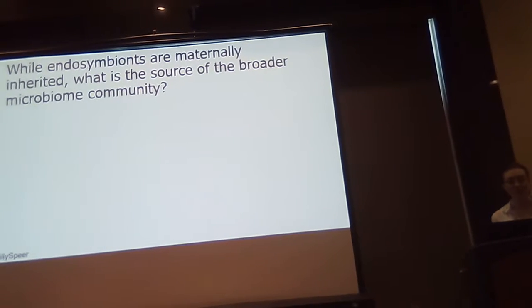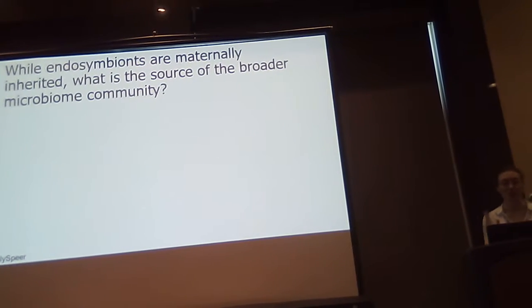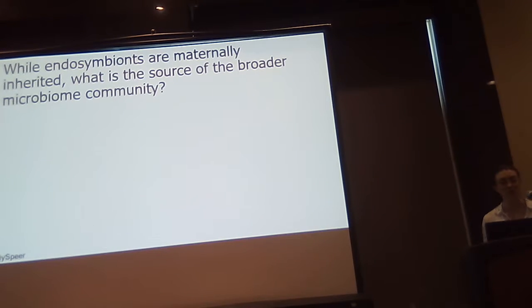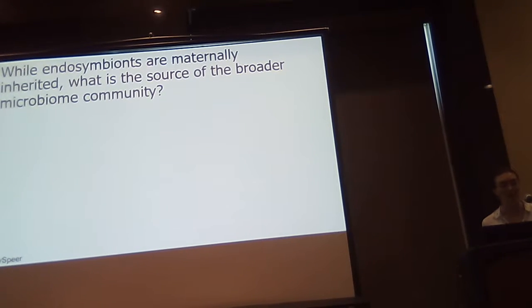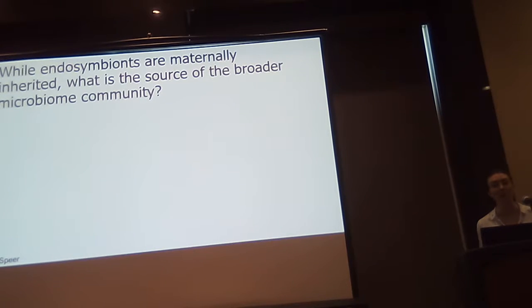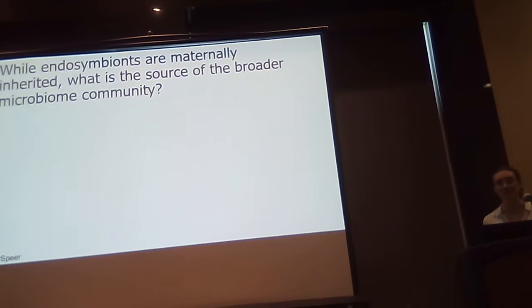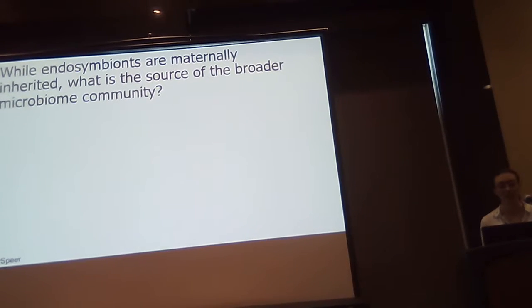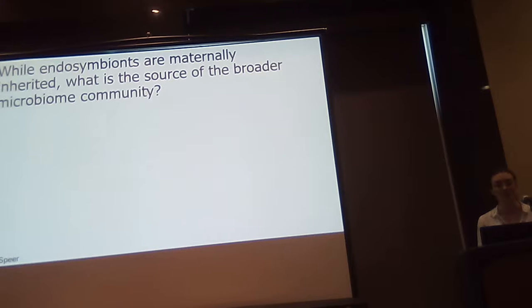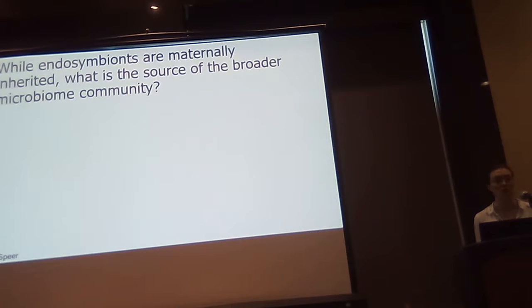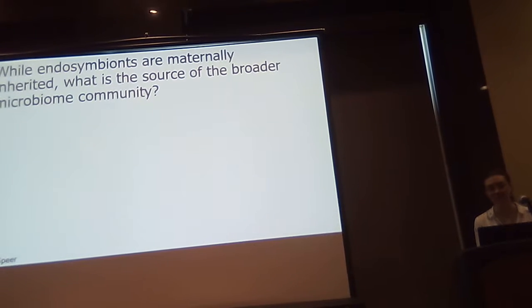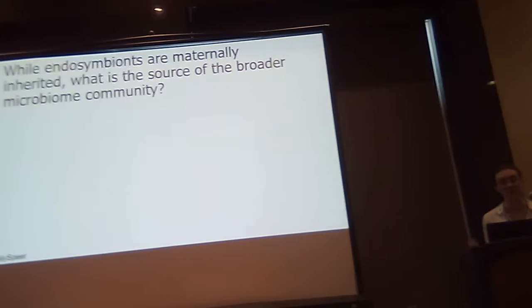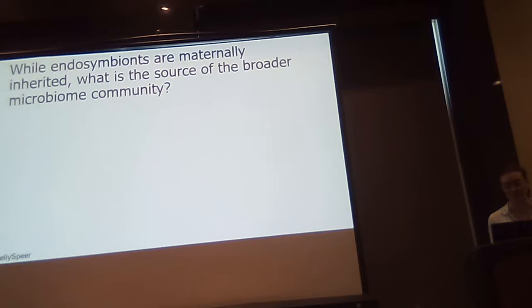While we understand that endosymbionts are maternally inherited, we don't really understand where these facultative bacteria that make up the broader microbiome community come from. Given that they provide these benefits to their host, this could have important implications for our understanding of how selection is acting to conserve the microbiome in insects, and our downstream understanding of how blood-feeding insects like tsetse flies and mosquitoes could act as vectors for disease.